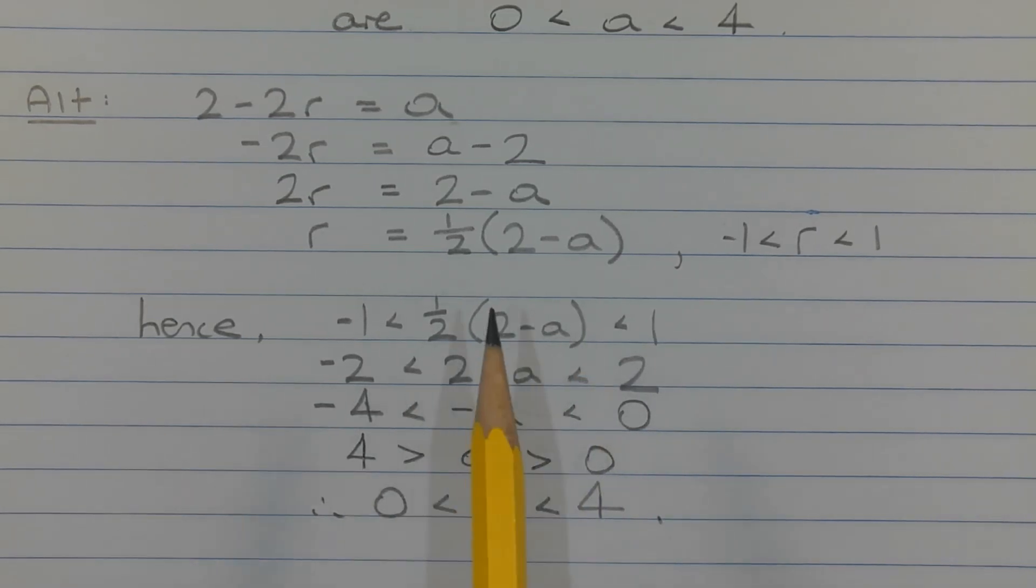Now we can isolate the A. So multiplying all terms by 2, we get 2 minus A greater than negative 2 and less than 2. Then we can subtract 2 from both sides and we get negative 4 here, negative A here, and 0 here. So negative A is greater than negative 4 and less than 0.